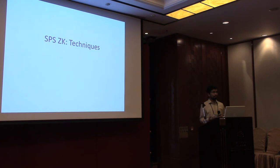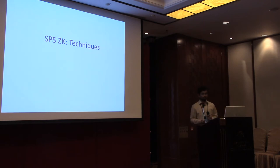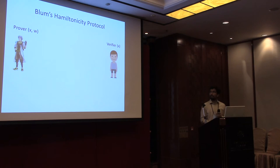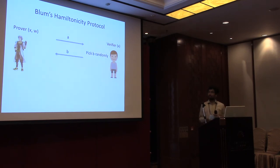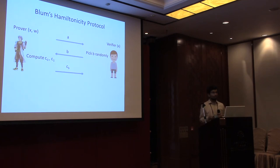Let me give a brief insight into how we achieve our results, focusing on the zero-knowledge protocol. Let's recap Blum's Hamiltonian cycle protocol. There's a prover with input x and w, and a verifier. The prover sends some string A — which is a set of commitments. The verifier picks some challenge bit b randomly, and the prover opens some of these commitments accordingly.